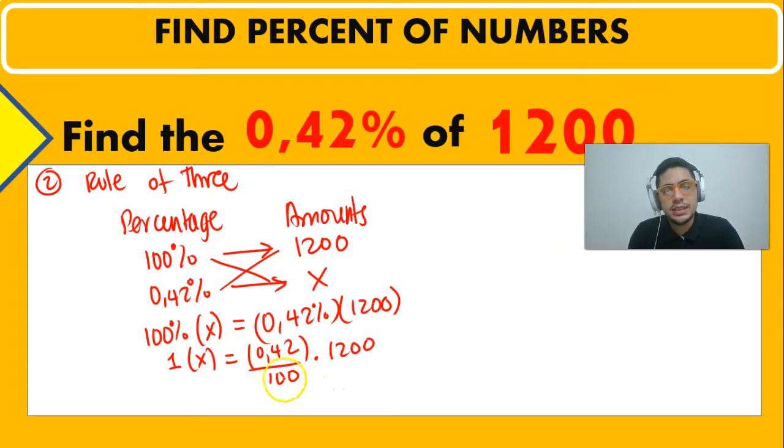And then we can simplify the two zeros with these two zeros. So the answer is going to be the same as 0.42 multiplied by 12, which is the same as 5.04.